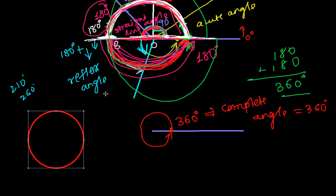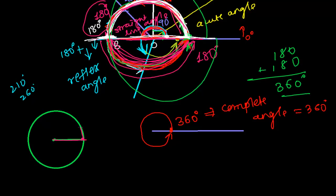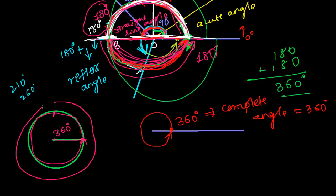In a circle, you might have seen this: here is my circle, this is the center, and this is the diameter. If you connect the center to the diameter and move that diameter completely around, you will cover 360 degrees. For example, suppose this is a clock — if you watch the minute hand, in one complete cycle it covers the whole circle and forms 360 degrees. This is the complete angle.